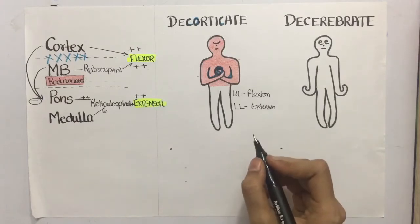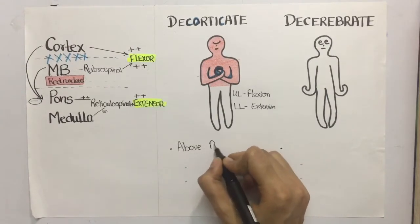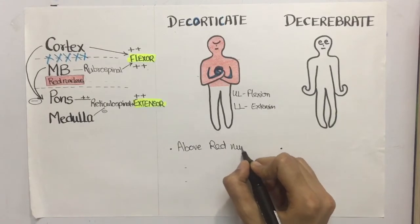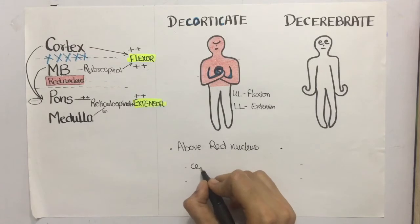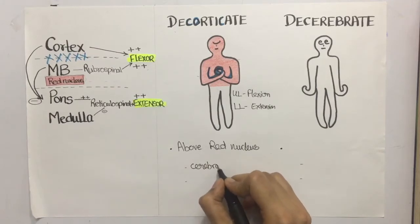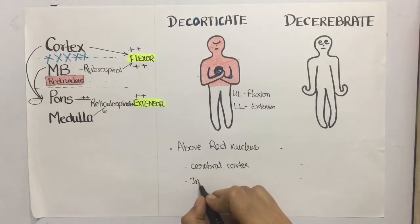So the lesion in decorticate rigidity is above the red nucleus, in the cerebral cortex or at the level of internal capsule.